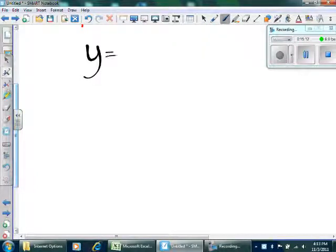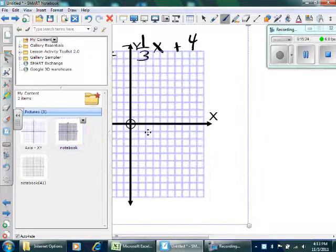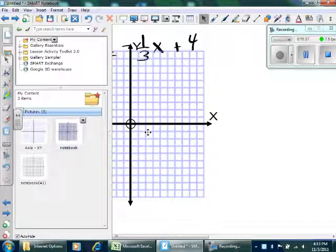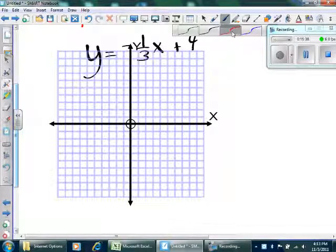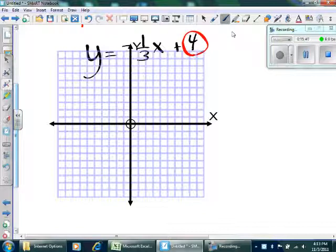In other words, if my equation was Y equals negative one-third X plus 4, I could take a graph. Plot the Y-intercept, which is right here. 0, 4. It's the Y-intercept. It's the place where this line is going to cross the Y-axis. I go to the Y-axis and I go up 1, 2, 3, 4.